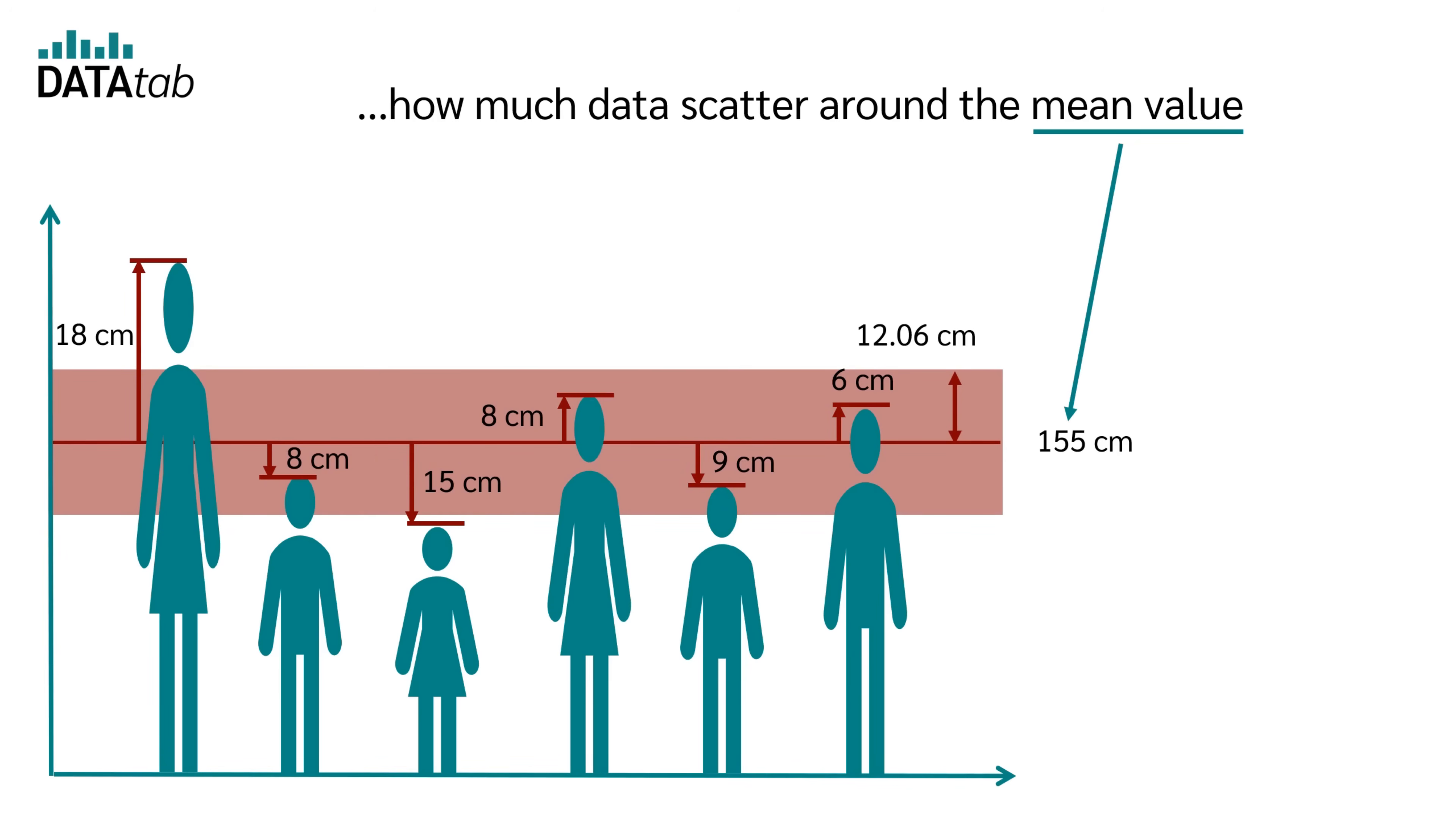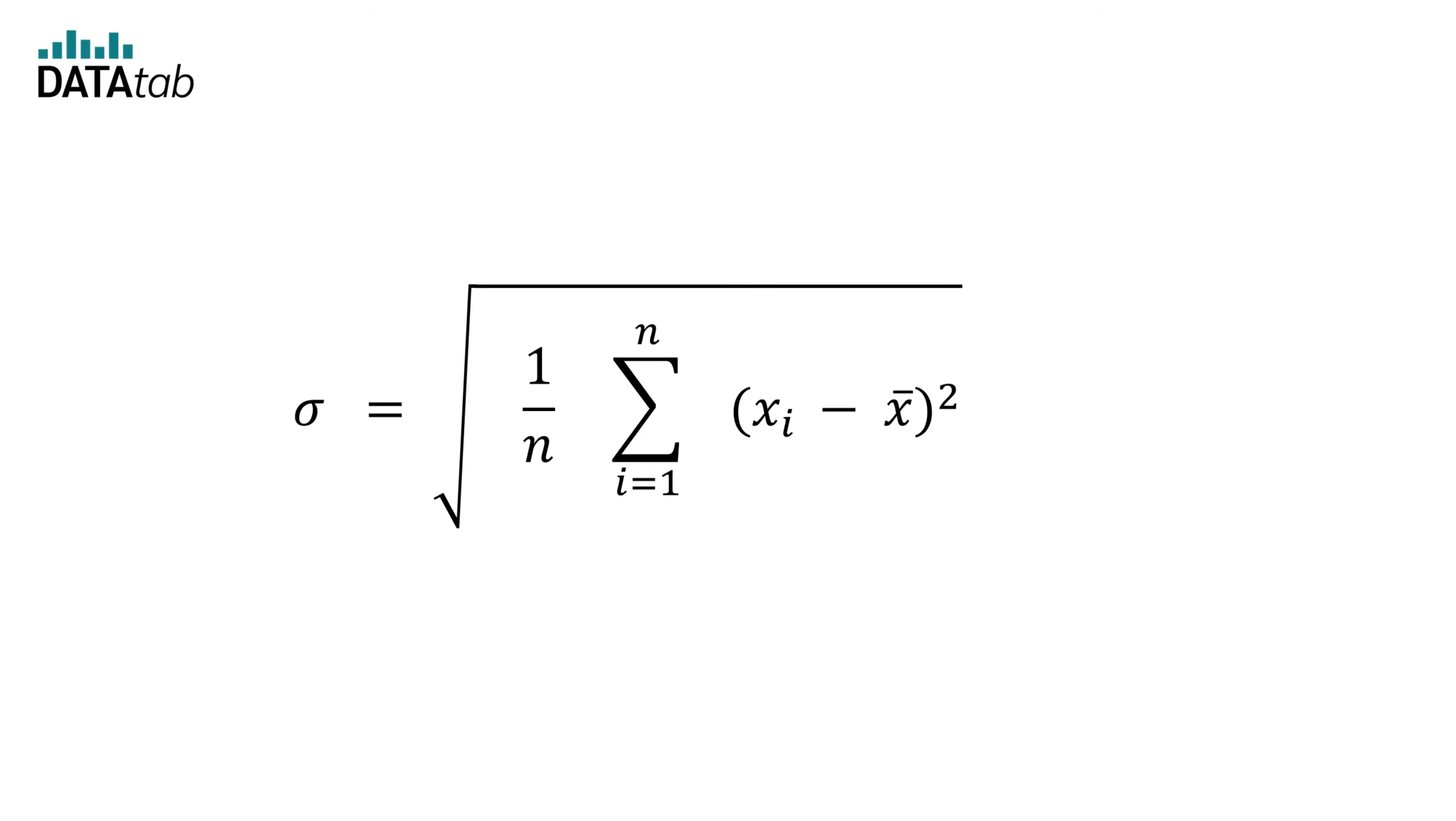And now, of course, the next question is, how can we calculate the standard deviation? You can calculate the standard deviation with the following formula. Sigma is the standard deviation, n is the number of persons, xi is the size of one single person, and x dash is the mean value of all people.